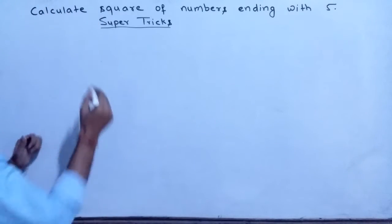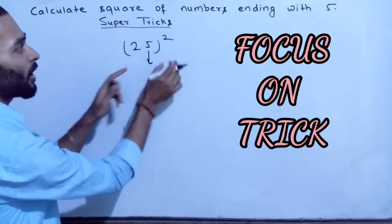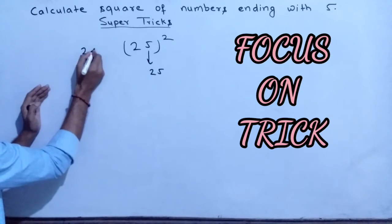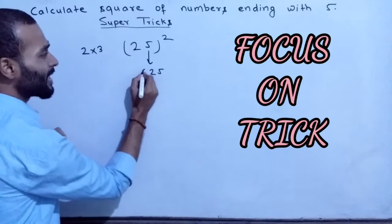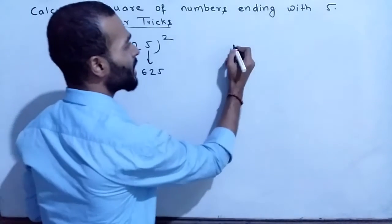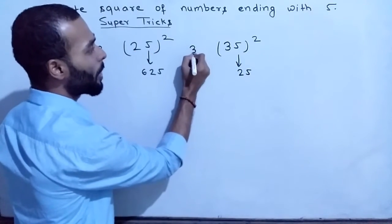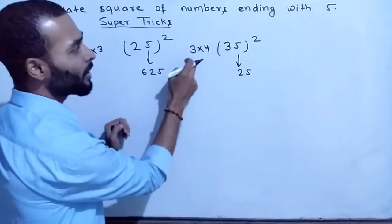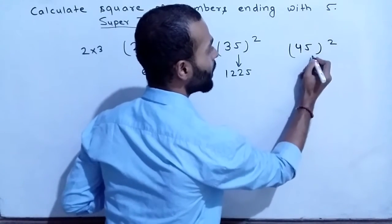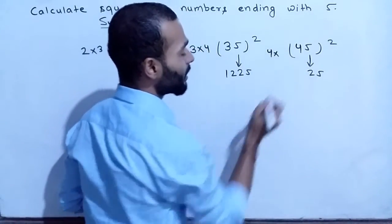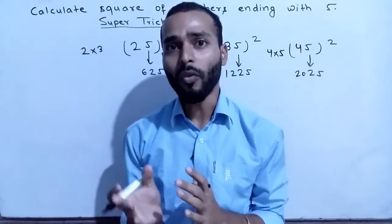Let's start with calculating the square of a number ending with 5. Take 25 squared. It's very easy. First, write 25 at the end — the square of 5 is 25. Then write the tens digit, which is 2, and multiply it by the next number: 2 times 3 equals 6. So 25 squared is 625. Another example: 35 squared. Square of 5 is 25, write 3, multiply 3 by 4, which is 12. So 35 squared is 1225. For 45 squared: square of 5 is 25, write 4, multiply 4 by 5, which is 20. So 45 squared is 2025. You can calculate the square of any number ending with 5 in just a few seconds.